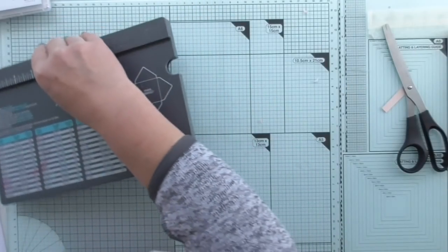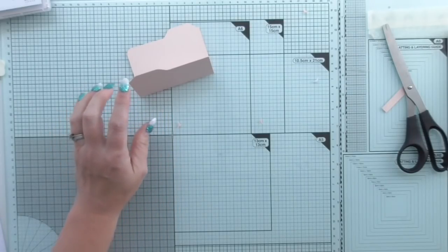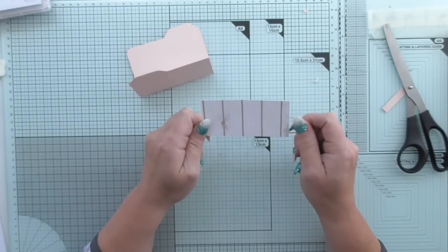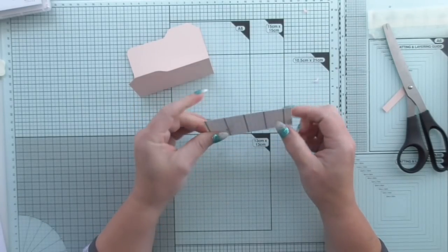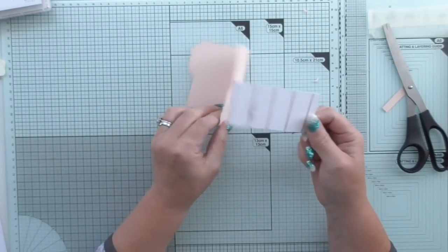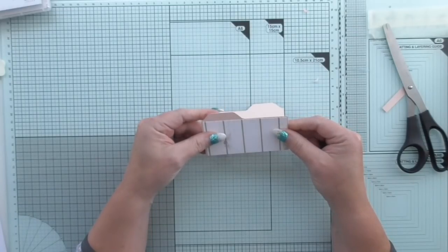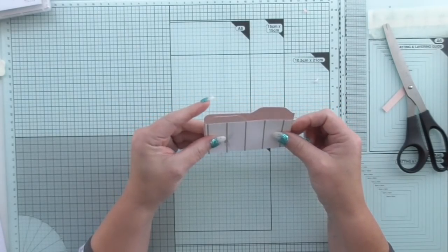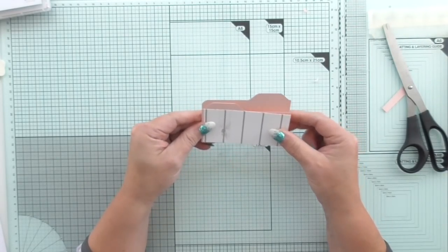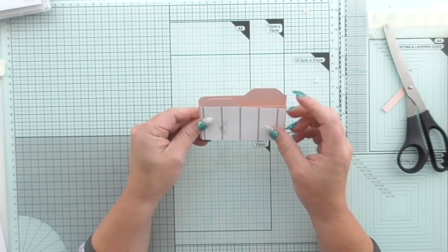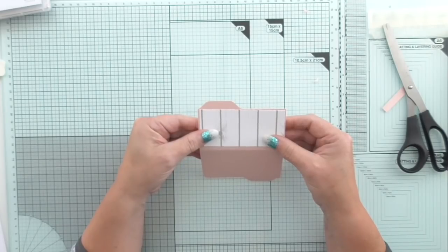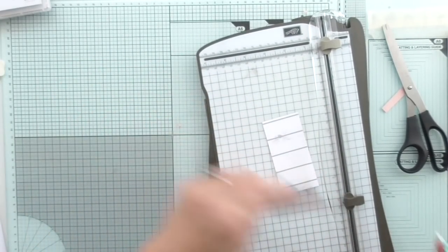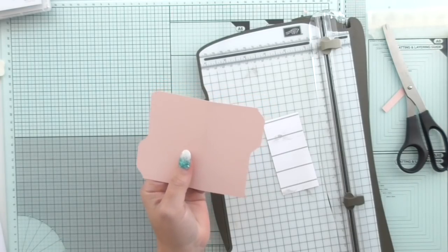Now what we need to do is we just need to layer the front of that with some DSP. I have chosen this which is a tiny off cut from the festive farmhouse DSP stack. I only have a few sheets of it because I got it through a paper share, so I'm using it like it's gold. Now you need to assess the size that you need. It should measure approximately three and seven eighths by one and seven eighths, but it will depend how far you've trimmed that.